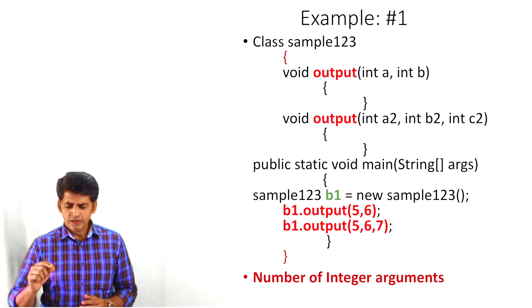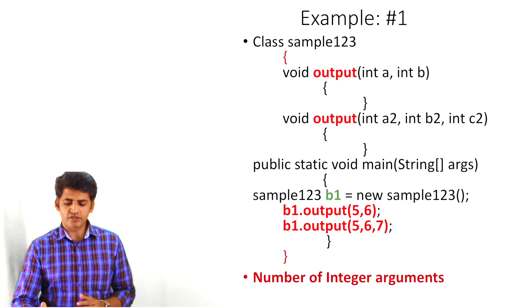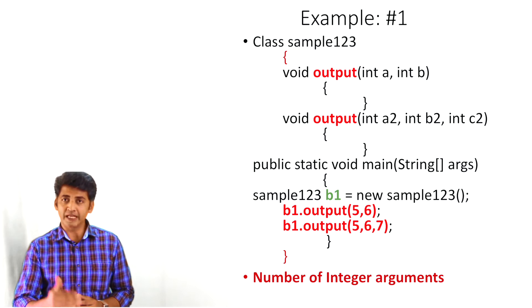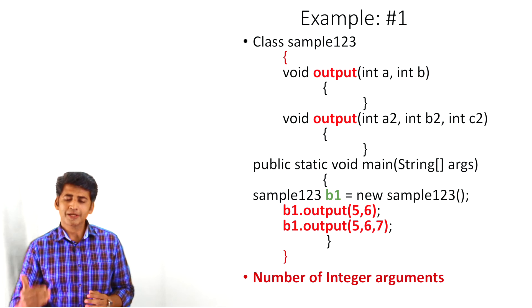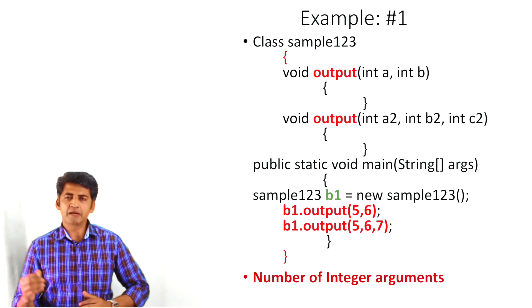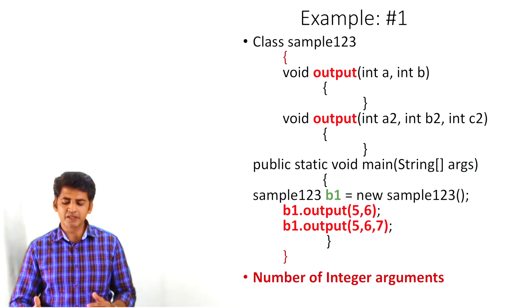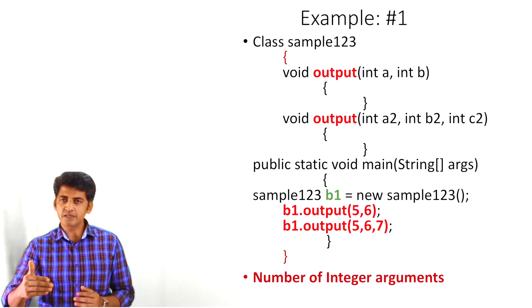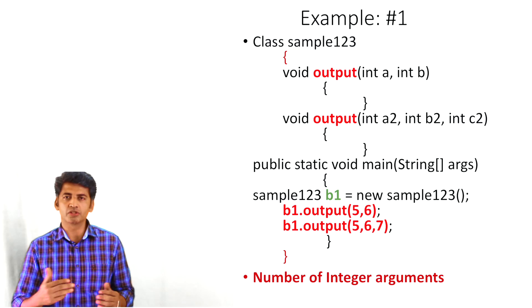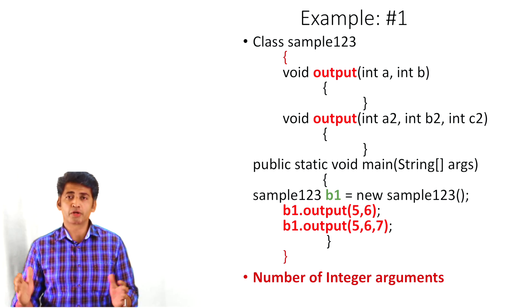Creating the main method — within the main method I'm creating the object for the class sample123. Then with the help of that object I'm going to pass the arguments. For the first method I'm passing the arguments 5 and 6, and for the second method I'm passing the arguments 5, 6, and 7. So the first method takes two arguments and the second method takes three arguments. This is the example for changing the number of arguments.